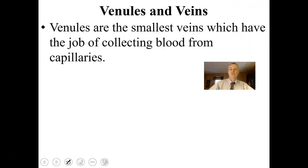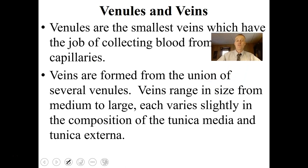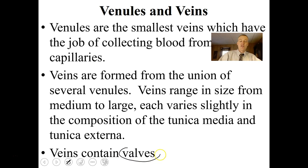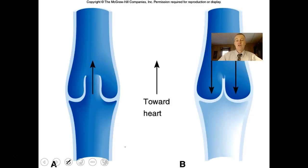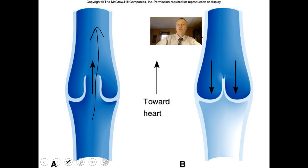Venules are the smallest veins, collecting blood from the capillaries. Veins are formed from the union of several venules, ranging in size from medium to large. Veins contain valves — little flaps of squamous tissue inside the vein that keep blood flowing in a one-way direction. Blood can flow through the valves in one direction, but if pressure goes the other way, those flaps close, preventing backflow.